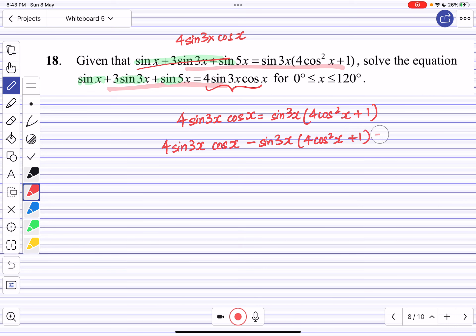We cannot divide by sin 3x because sin 3x can be zero, and dividing by zero is undefined. Factor out sin 3x as a common factor: sin 3x(4cos x - 4cos²x - 1) = 0.